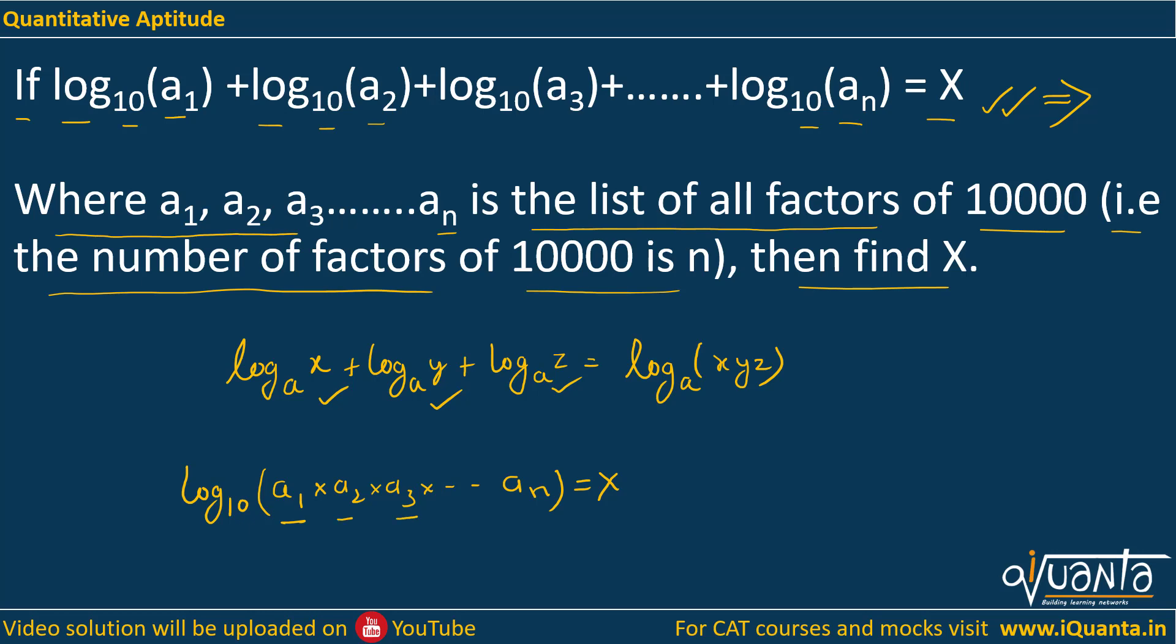Now we have a₁ × a₂ × a₃ × ... × aₙ, and these are all the factors of 10,000. So we're multiplying all factors of 10,000 inside this log. The product of factors of a number—as you may have learned in number system—is the number raised to the power of (number of factors / 2). So it's 10,000^(n/2). Our first task is to find the number of factors of 10,000.